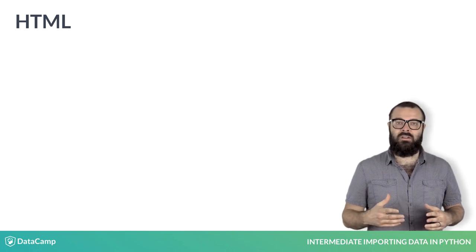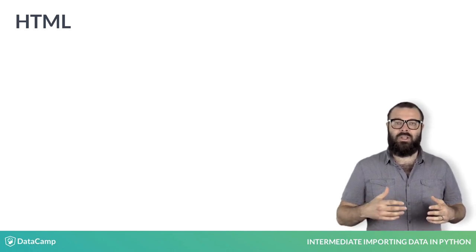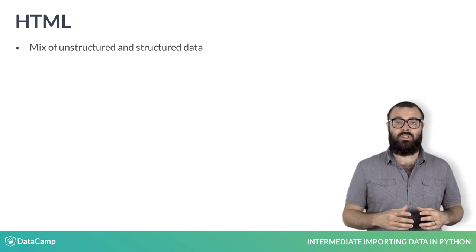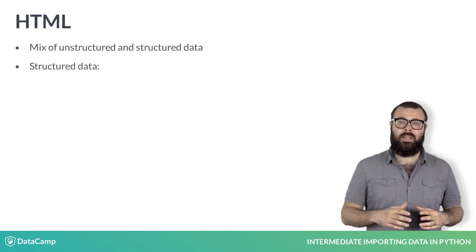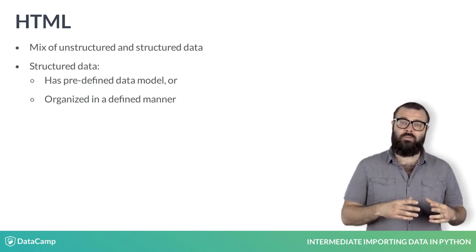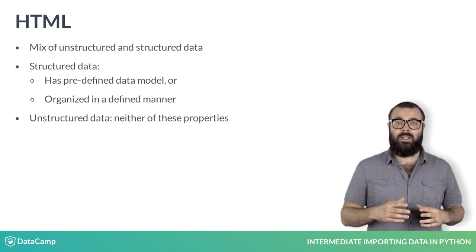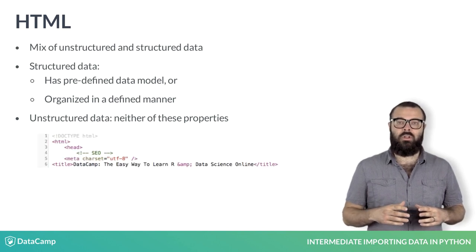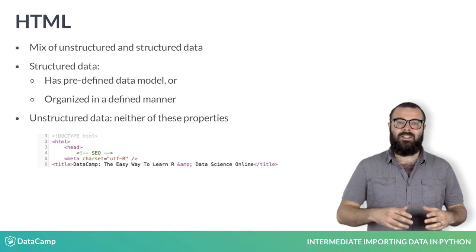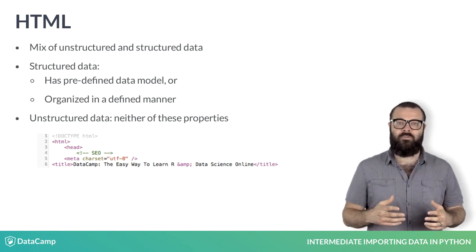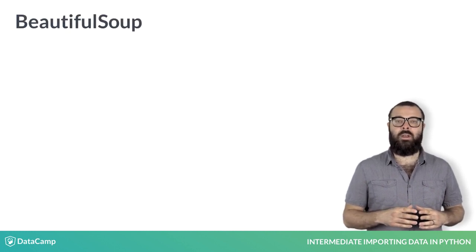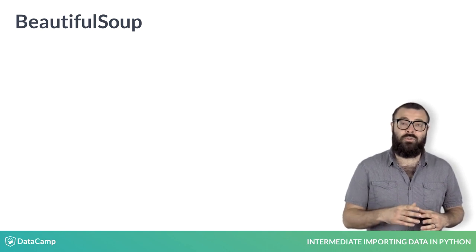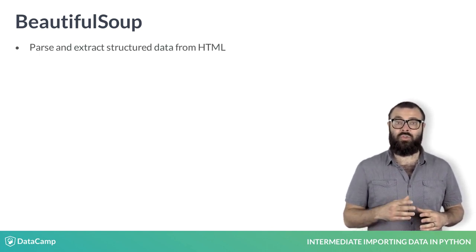You've got the HTML of your page of interest, but generally HTML is a jumbled mix of both unstructured and structured data. Structured data has a predefined data model or is organised in a defined manner, while unstructured data does not possess either of these properties. HTML is interesting because, although much of it is unstructured text, it does contain tags that determine where headings and hyperlinks can be found. To turn scraped HTML into useful data, you'll need to parse it and extract structured data from it.